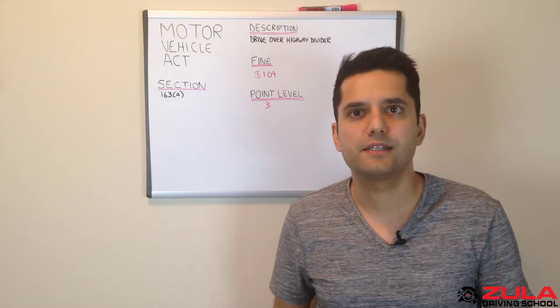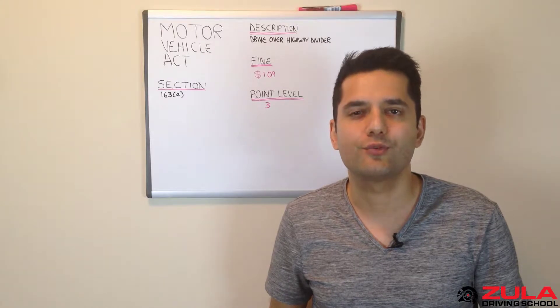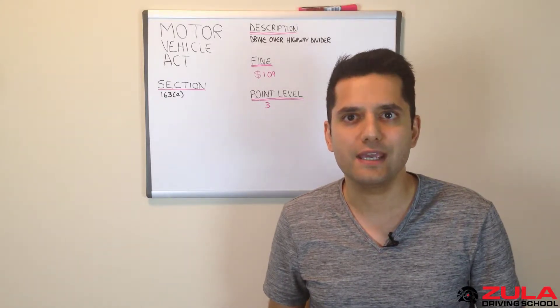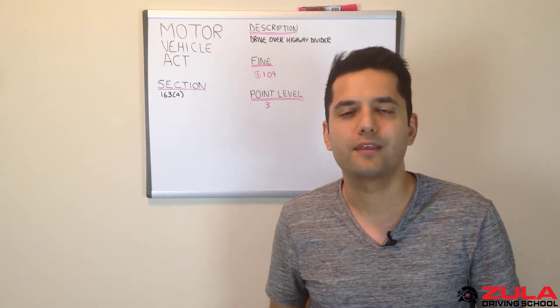In this video, we'll be discussing the traffic offense relating to the BC Motor Vehicle Act Section 163, Clause A, also known as Driving Over a Highway Divider. That's coming right up.